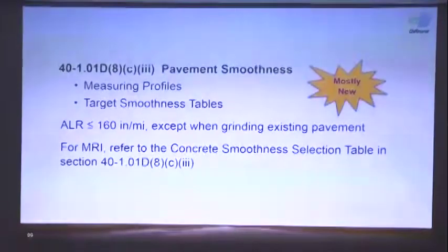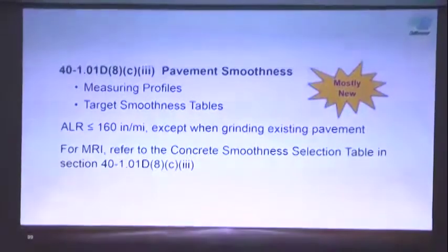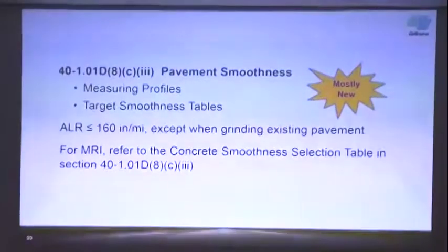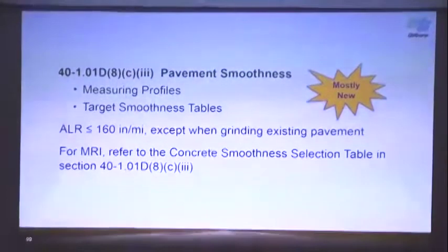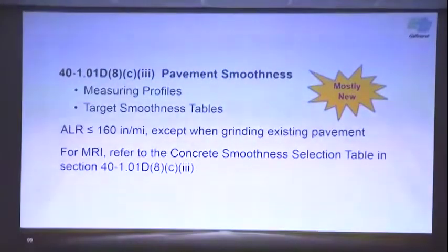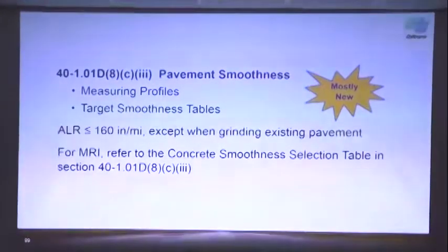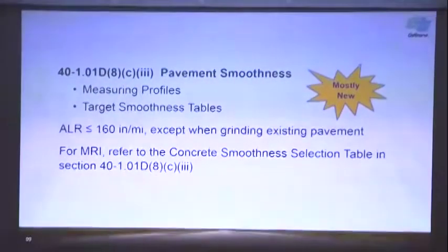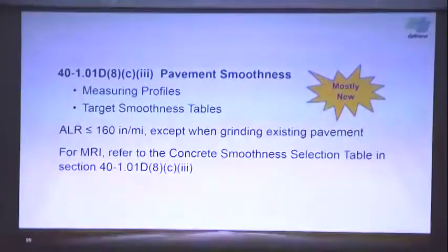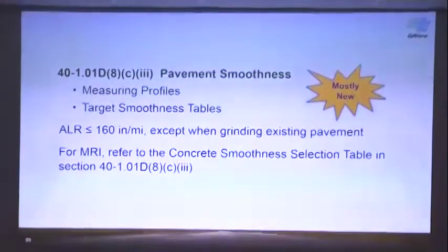This is the section of the standard specifications that's been changed. The ALR new requirement is 160 inches per mile, except when grinding existing pavement. And for the MRI, you refer to the concrete smoothness selection table.